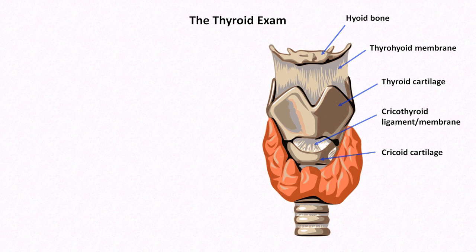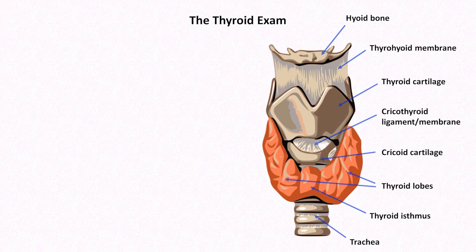Moving downward is the cricoid cartilage, which is also palpable but not as prominent as the thyroid cartilage. Below the cricoid cartilage, just anterior to the second and third tracheal rings, is where the isthmus of the thyroid is most commonly located, with the two lobes extending outward laterally. The gland wraps itself around the anterior and lateral aspects of the larynx and upper trachea. It may have occurred to you that these structures are poorly named, as it is misleading that the thyroid cartilage is not actually adjacent to the thyroid gland — but unfortunately these are the names we are stuck with.